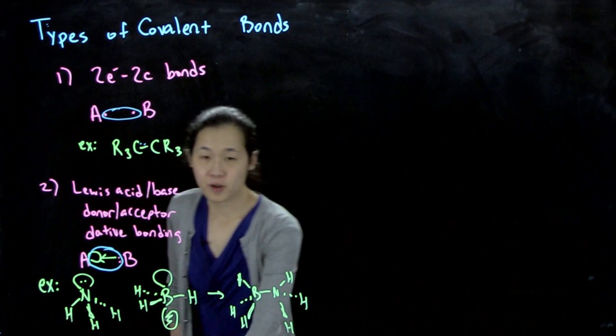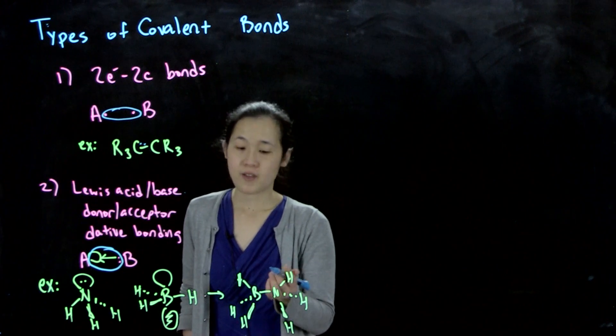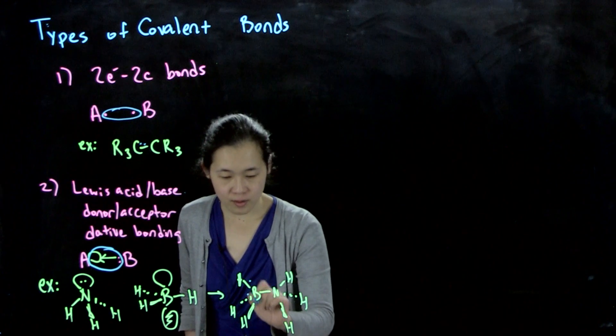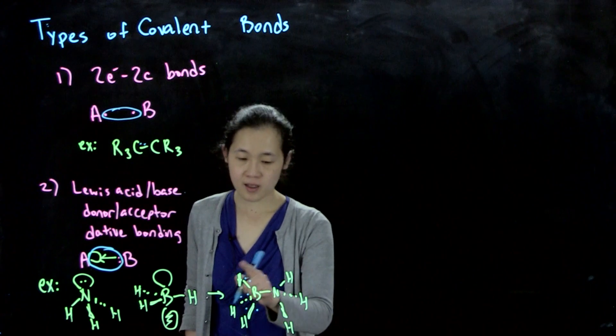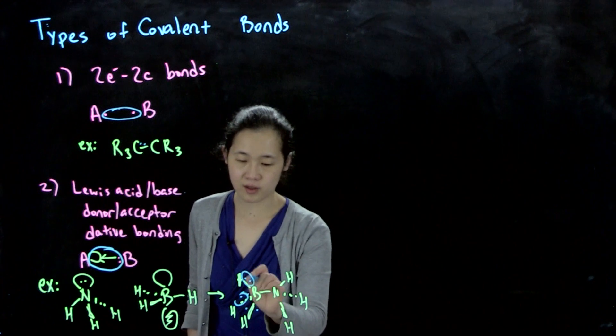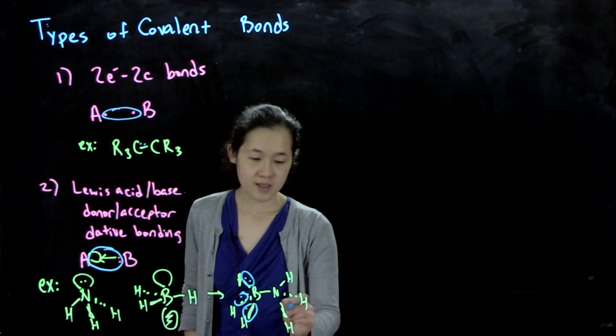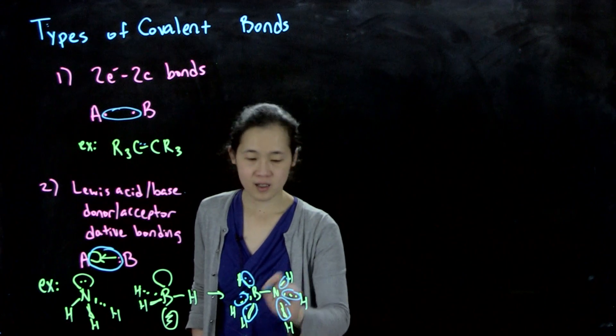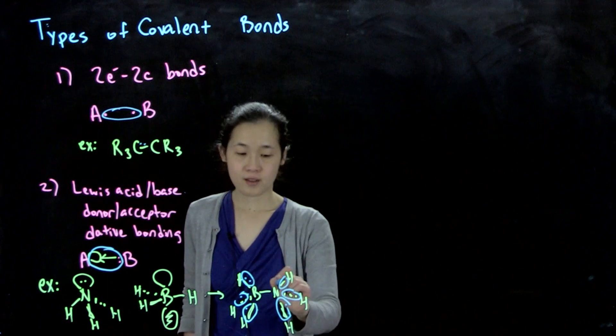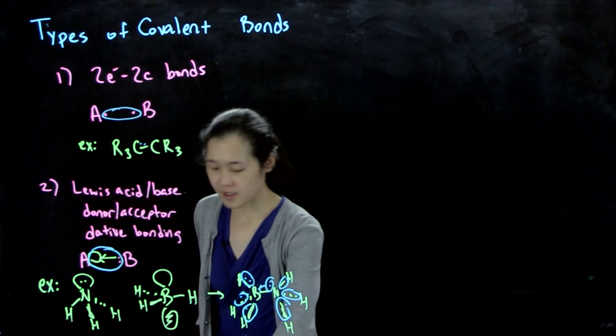If we're doing electron counting, we know that boron should have three valence electrons. Hydrogen has one valence electron each. So these bonds are all our original normal two center two electron covalent bonds. Same for nitrogen with our normal two center two electron bonds. But nitrogen starts off with five valence electrons here, so this is the dative interaction.